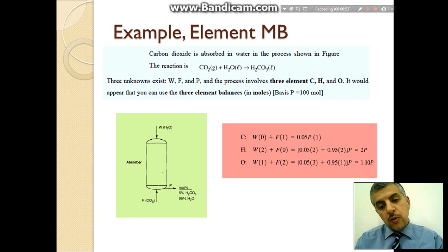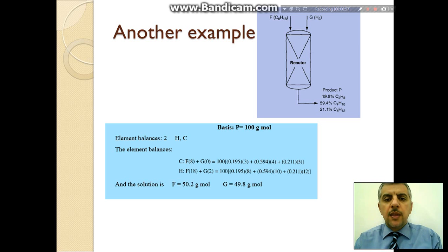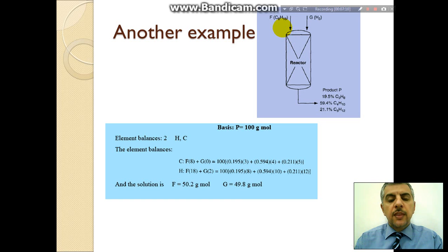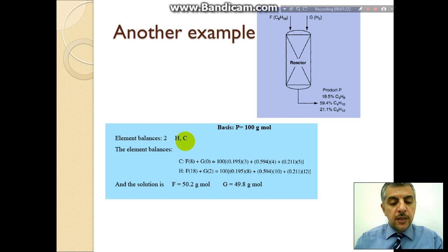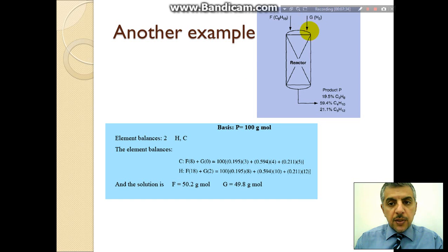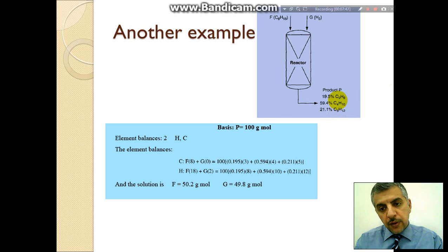Another example shows that for producing a mixture, you do not need the chemical reaction equation for the element material balance. Here we have two elements — hydrogen and carbon — so we have two element material balance equations. For carbon: the number of carbon atoms in one stream equals eight times the total feed amount, plus zero from the next stream. On the output side, we have three carbon atoms times the fraction times the total amount.